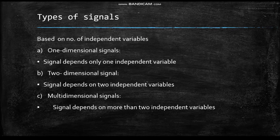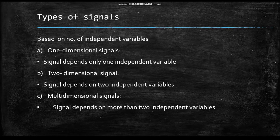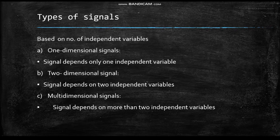Based on the number of independent variables, signals can be classified into three types: one-dimensional signals, two-dimensional signals, and multi-dimensional signals. A one-dimensional signal depends upon only one independent variable — for example, ECG, that is electrocardiography. A two-dimensional signal depends upon two independent variables — an example is a picture signal or an image in pixels, which is a function of both x and y coordinates, making it two-dimensional.